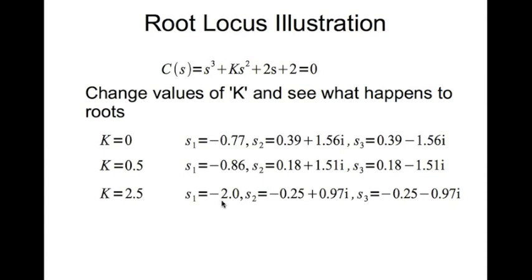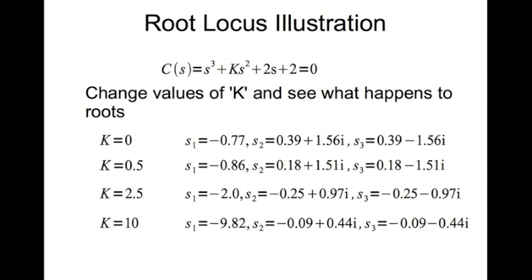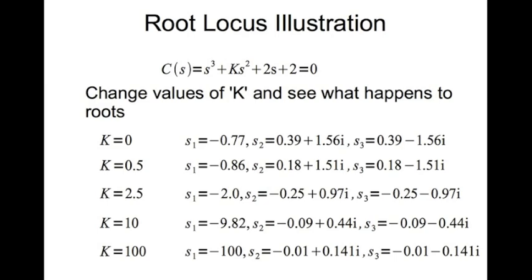At K=2.5 we get three other roots. The real root is in the left half plane, and now the complex pair has also moved into the left half plane because it has negative real parts — therefore this closed-loop system is stable. By changing K, we made a closed-loop system that was unstable into a stable one. So changing K gave us stability, satisfying the basic requirement of control system design.